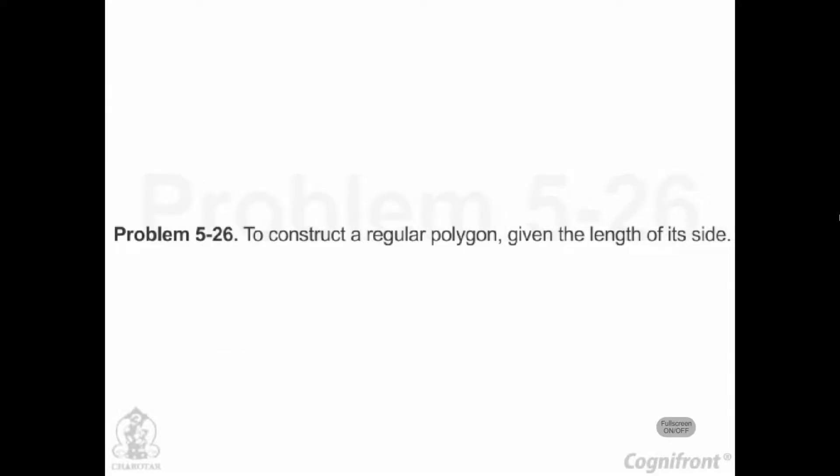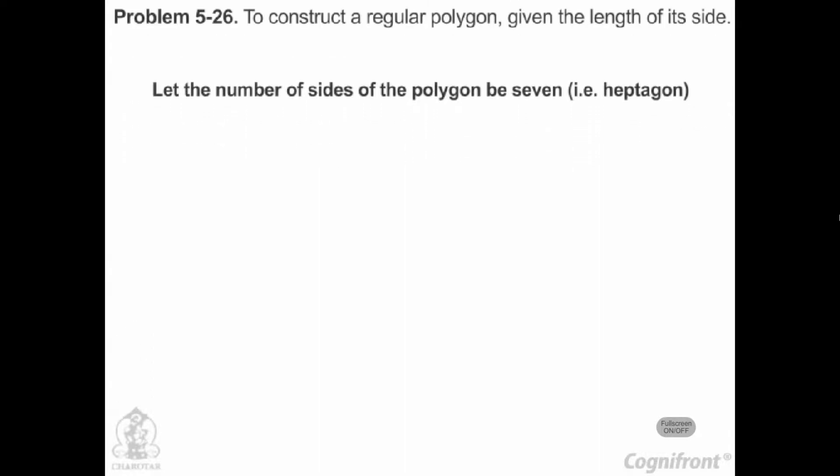Problem 5-26: To construct a regular polygon given the length of its side. Let the number of sides of the polygon be 7, i.e., heptagon.